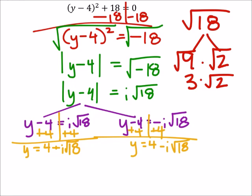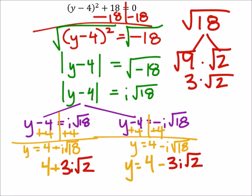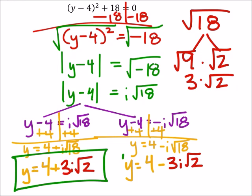So now I've got 3i√2 for both of these, and then I've still got 4 + 3i√2, and then 4 - 3i√2. Those are my two y values that would make that original equation a true statement.